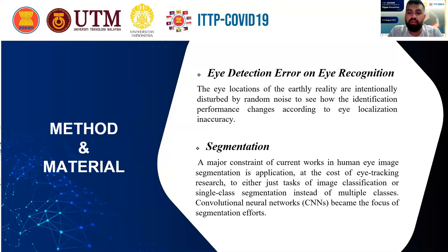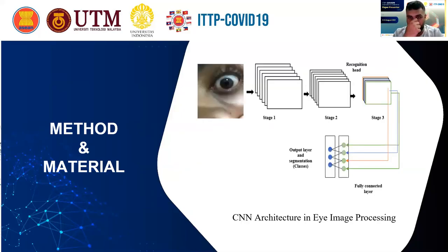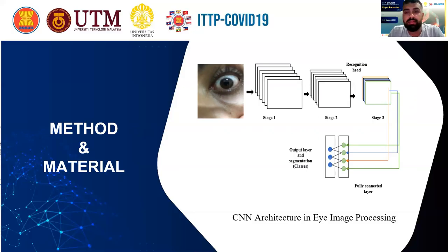CNN has become the focus of the segmentation efforts. As shown in the slides, this is the CNN architecture in eye image processing that we have used. There are three stages: firstly the input, which is the image itself based on the dataset. Then it passes through three stages. After that it becomes the fully connected layer, and at the end the output layer and segmentation classes are shown.